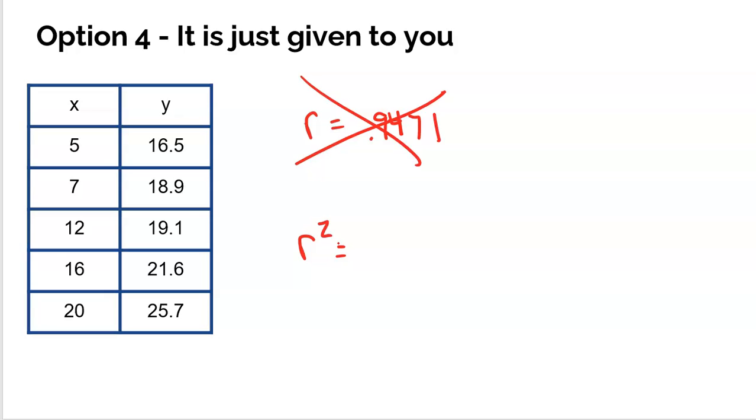Now, remember, R squared is literally just R squared. So if I take 0.9471 and I square it, I get 0.8970, rounding that a little bit. So just be aware that if you are not given R, maybe you are given R squared.